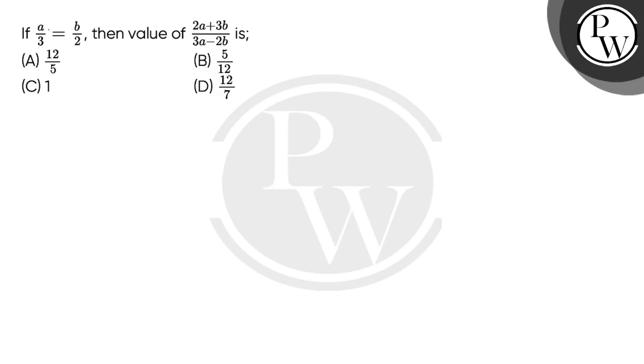So, let's read the question. If a by 3 equals to b by 2, then value of 2a plus 3b divided by 3a minus 2b is.